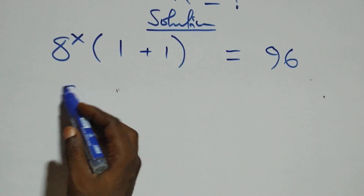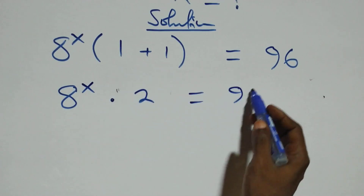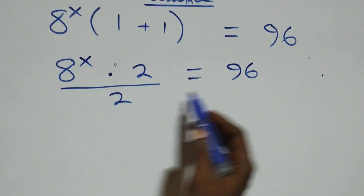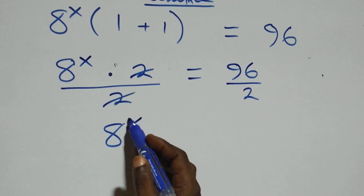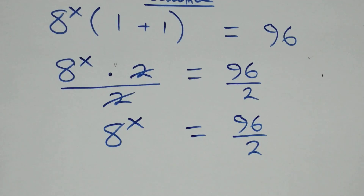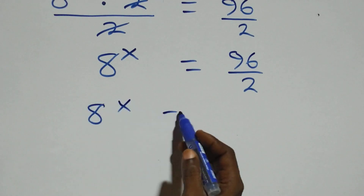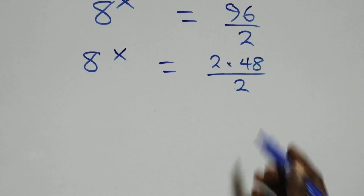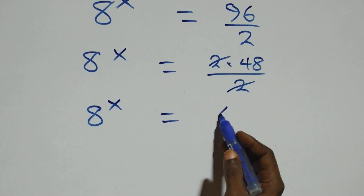The next step: 8 raised to the power x times 2 equals 96. Here we divide both sides by 2 — divide this side by 2, also divide this side by 2. The twos cancel each other, and we have 8 raised to the power x equals 96 over 2, which simplifies to 8 raised to the power x equals 48.